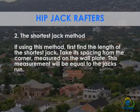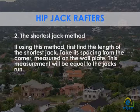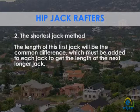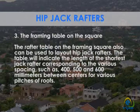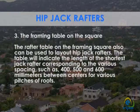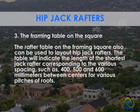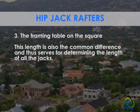Method 2 — the shortest jack method: first, find the length of the shortest jack. Take its spacing from the corner, measured on the wall plate. This measurement will be equal to the jack's run. The length of this first jack will be the common difference, which must be added to each jack to get the length of the next longer jack. Method 3 — the framing table on the square: the rafter table on the framing square can also be used to lay out hip jack rafters. The table will indicate the length of the shortest jack rafter corresponding to various spacings such as 400, 500, and 600 millimeters between centers for various pitches of roofs. This length is also the common difference and thus serves for determining the length of all the jacks.